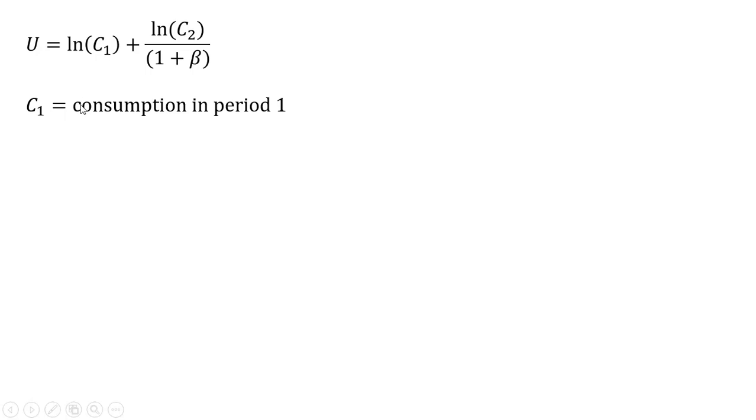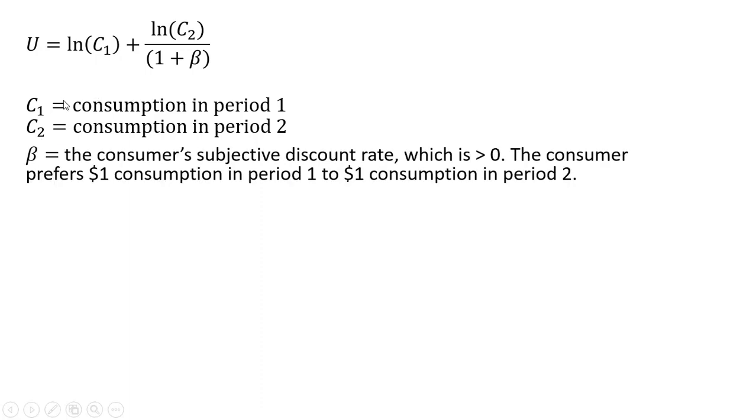So here's our utility function, where C subscript 1 is the consumption in period 1, C subscript 2 is the consumption in period 2. Beta here is the consumer's subjective discount rate, which we're going to assume is greater than zero. And because it's greater than zero, the consumer prefers a dollar of consumption in period 1 to a dollar of consumption in period 2, all else being equal.